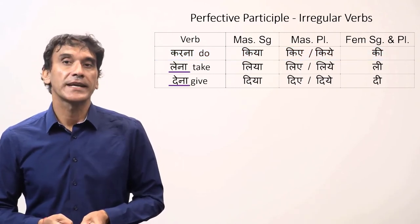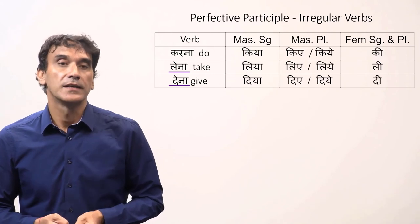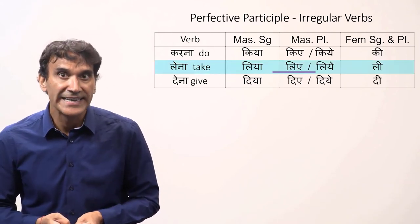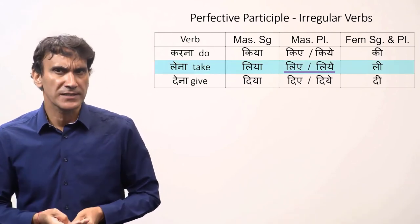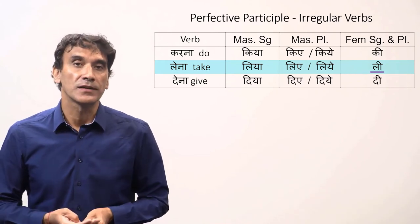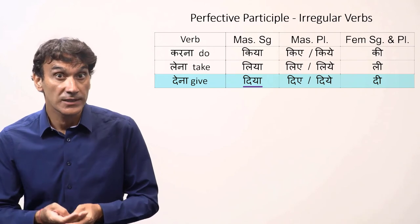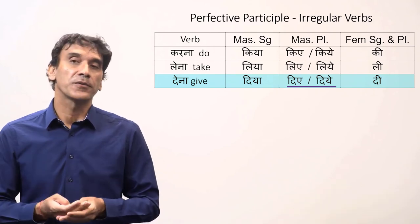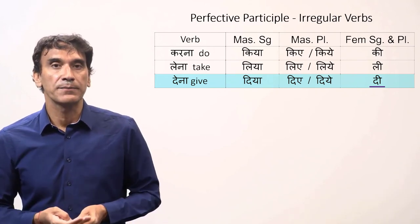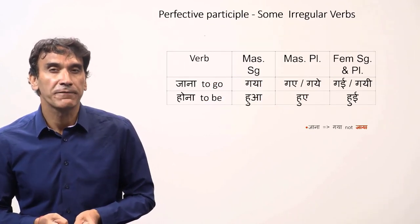For lena, to take, and dena, to give, the forms are very similar. For lena: liya for masculine singular, liye or liye for masculine plural, and li for feminine singular and plural. Similarly for dena: diya for masculine singular, diye or diye for masculine plural, and di for feminine singular and plural.